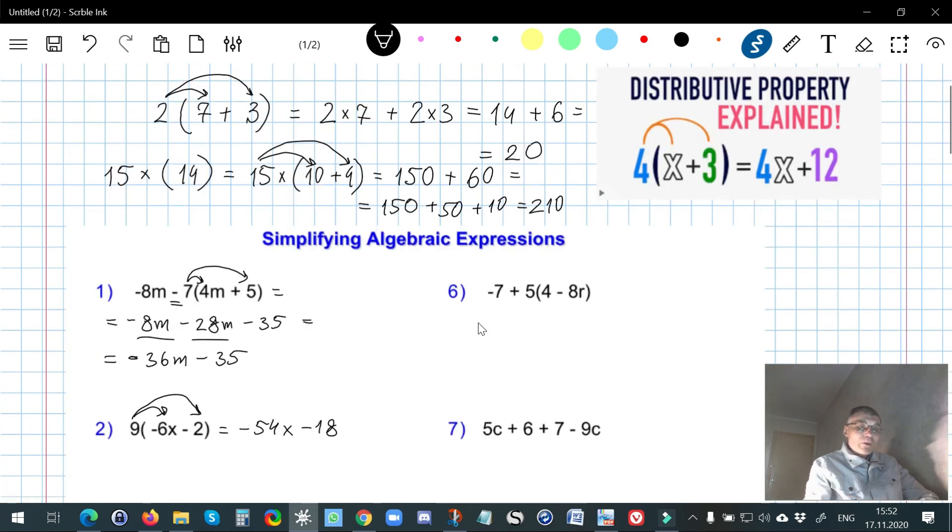And number 6 we have to distribute and then to simplify. At first we keep negative 7, then positive 5 multiplied by positive 4 is 20. And positive 5 multiplied by negative 8, it's negative 40. Don't forget about r. And the last step, combining the like terms. Negative 7 plus positive 20 gives me positive 13. And I don't have to write the sign when it's positive.